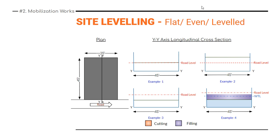Let's understand the flat even level condition in more detail. Four sub-conditions exist here. In the first, the land level is the same as the road level — ideal. In the second, the natural ground level is above the road level. In the third, the road level is higher than the natural ground level. In the fourth, the road level is higher, the natural ground level is lower, and there is also a high water table level.